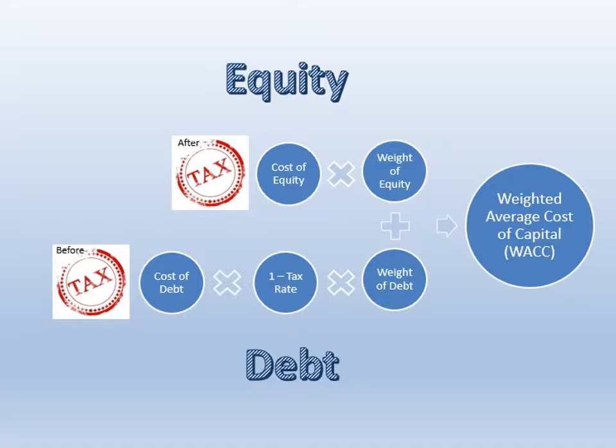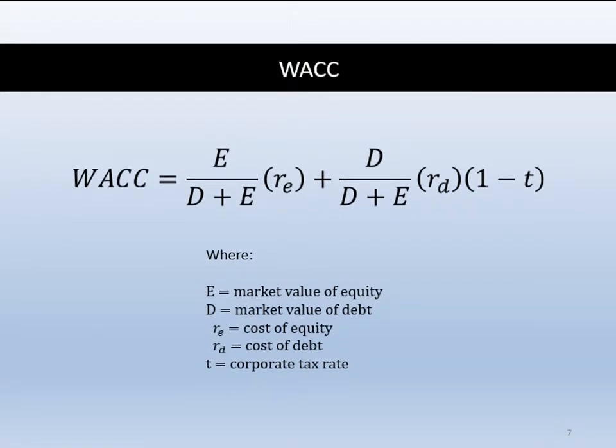Where do the weights come from? Often when you value a private firm, you'll look at the percentage of total assets financed with equity and the percentage financed with debt, and use those weights in this calculation. In some cases that's perfectly fine. But in virtually all cases, the weights should be based on market values and not book values. For private firms, this is very difficult because these firms obviously don't trade, so the market value of equity is something we don't know prior to starting the valuation.